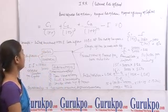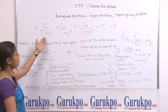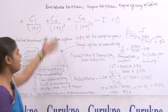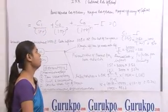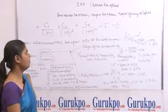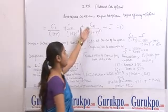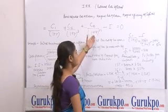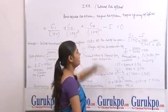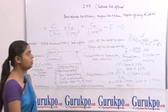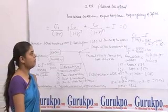The IRR formula is: C1 divided by (1 + R), plus C2 divided by (1 + R)^2, and so on up to CN divided by (1 + R)^N, minus the initial investment, equals zero.